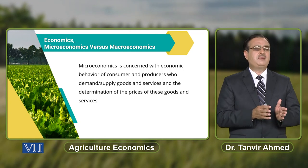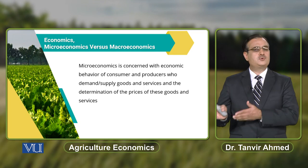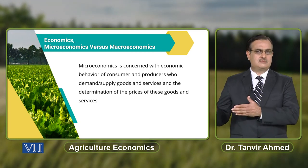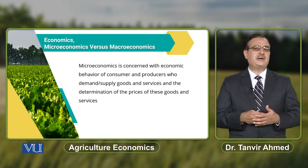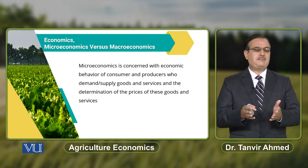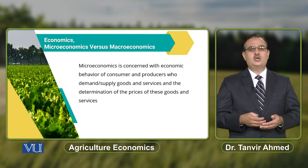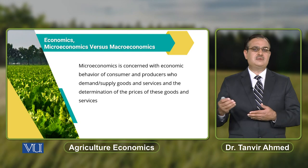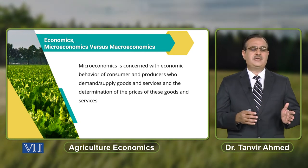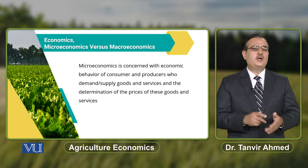The behavior of consumer and producer will be different in different market structures — it differs in competitive and imperfectly competitive markets. On the seller side in imperfectly competitive markets, we discuss monopolistic competition, monopoly, and oligopoly. On the buyer side, we discuss oligopsony, monopsony, and monopsonistic competition. All these market structures play a role in the determination of prices, and all of this is studied under Micro Economics.